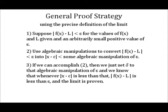Second, use algebraic manipulations to convert the inequality — the absolute value of f(x) minus L is less than epsilon — into the absolute value of x minus c is less than some algebraic manipulation of epsilon. And third, if we can accomplish step two, then we just set delta to that algebraic manipulation of epsilon, and we know that whenever the absolute value of x minus c is less than that, the absolute value of f(x) minus L is less than epsilon, and the limit is proven.